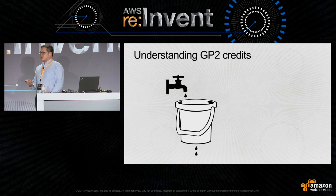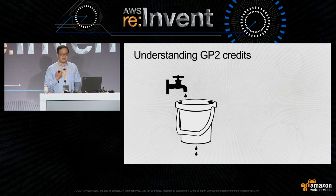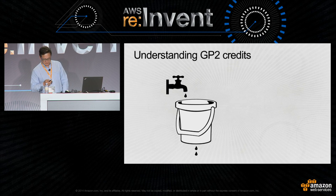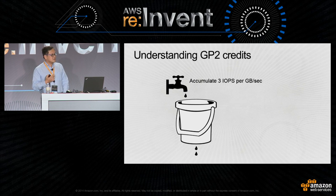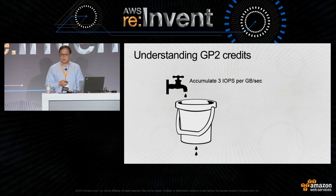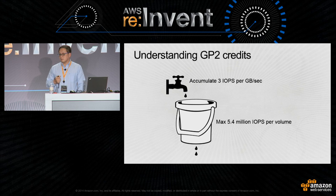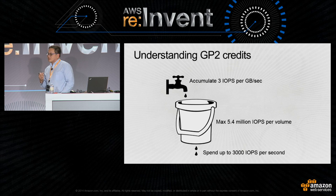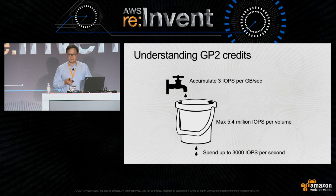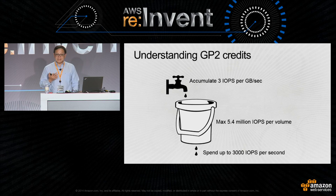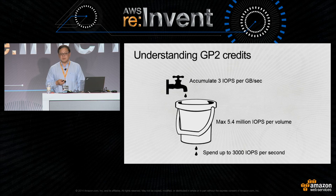How do GP2 credits work? I like to think of it as a leaky bucket. You accumulate approximately three IOPs per gigabyte per second in your bucket, and this bucket can hold a maximum of 5.4 million IOPs per volume. From this bucket, you can spend up to 3,000 IOPs per second, and after you exhaust all your credits, you fall back to your base performance of three IOPs per second.